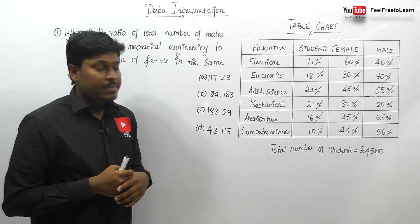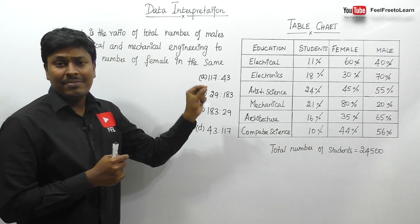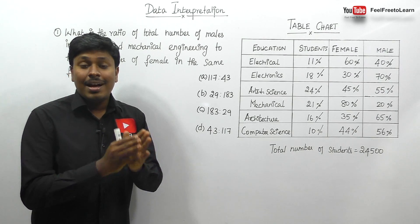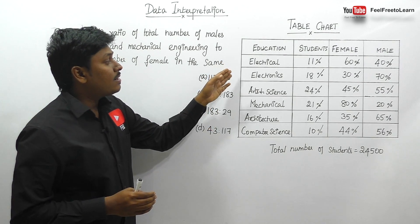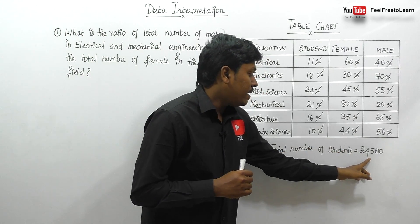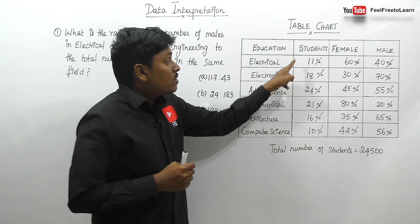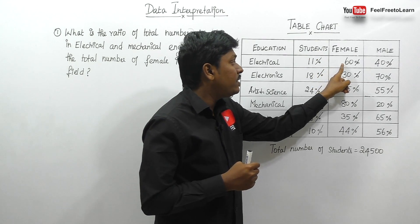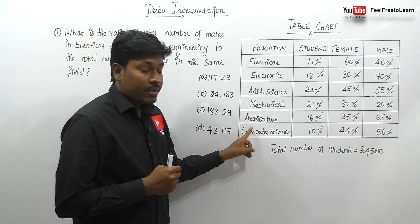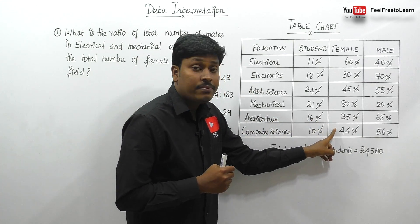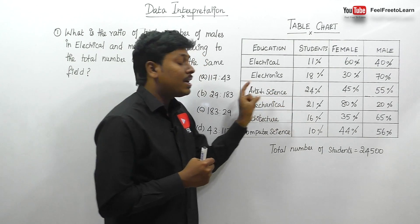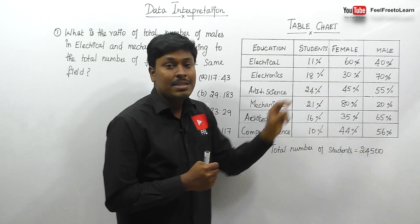All values in the chart are given in percentage. Out of 24,500 students, 11% are studying electrical — of that 11%, 60% are female and 40% are male. 10% are computer science — of that, 44% are female and 56% are male. 24% are arts and science — of that, 45% are female and 55% are male.